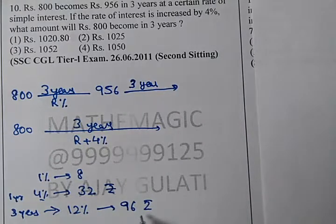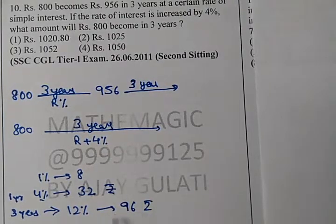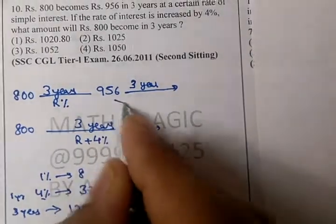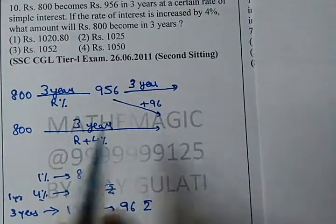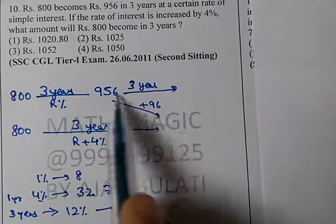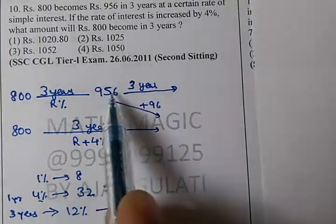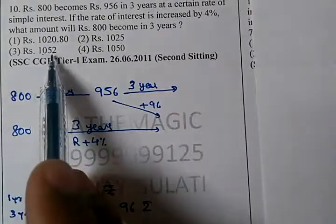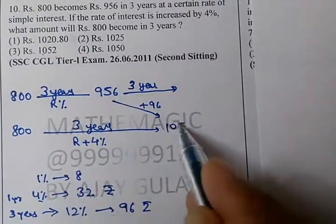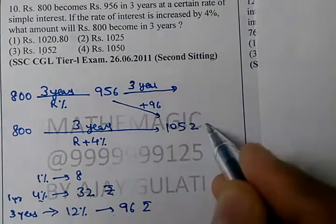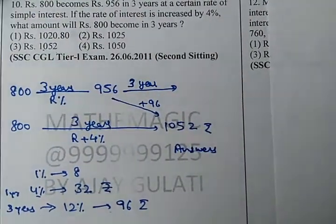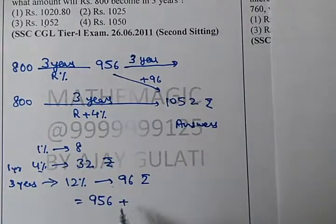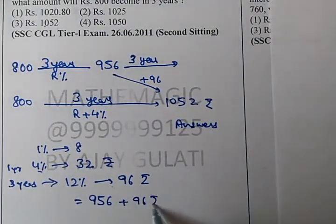For 3 years, it is 96 rupees. So what is my answer? 956 plus 96. Let's add this: 6 and 6 is 12, carry 1, giving 1052 rupees. The answer is 956 plus 96 rupees, which equals Rs.1052.